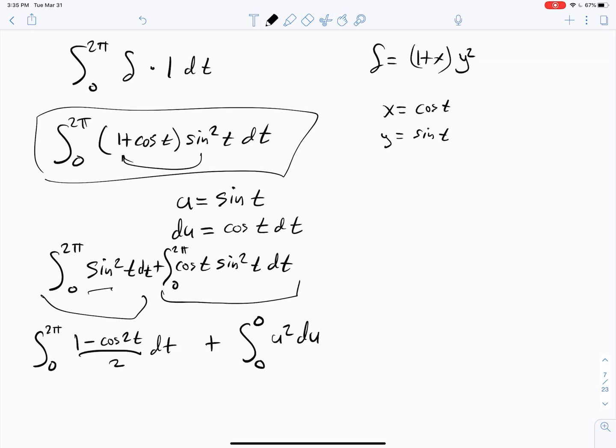And then completing the integral here, we'll just have ½t - sin 2t/4 evaluated from 0 to 2π, and then we'll plus u³/3 evaluated from 0 to 0. Well, of course that's going to be 0. And the other one, I think, is going to equal basically just π.